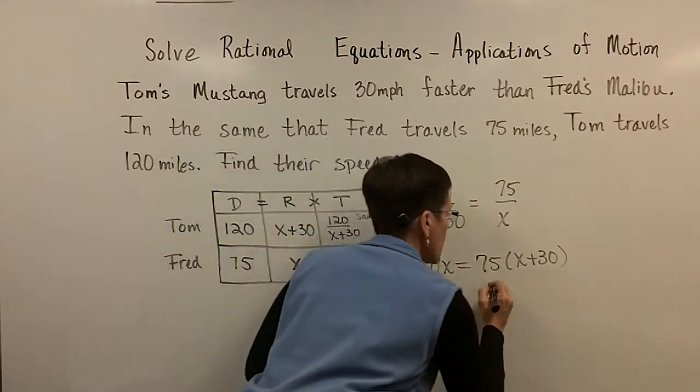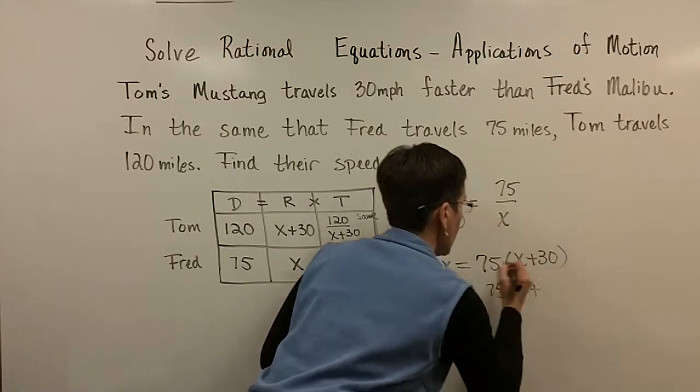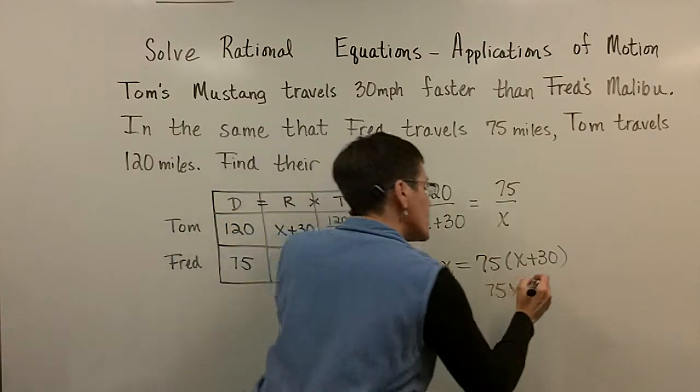I'm just going to set 120x equal to 75 times x plus 30. And so over here,